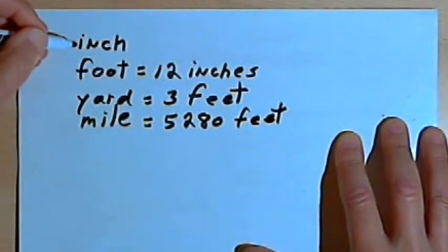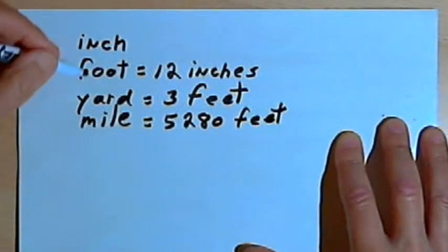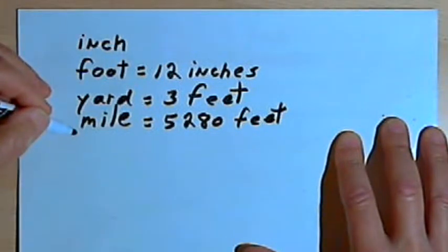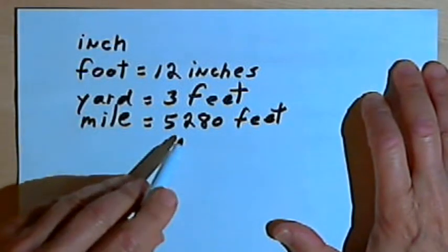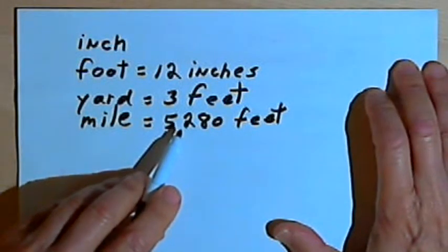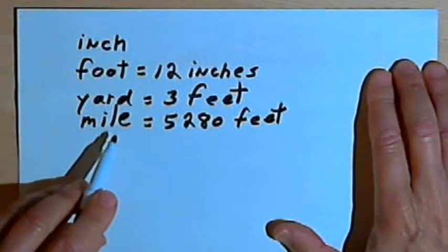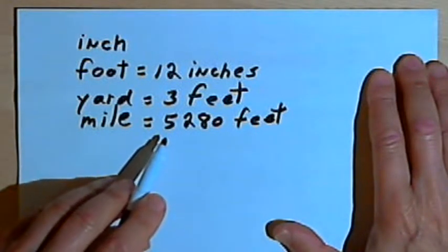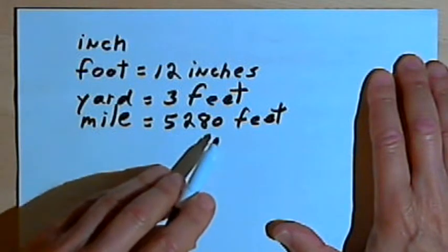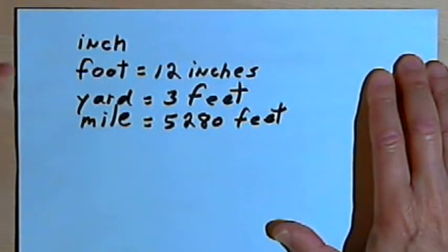Now the system gets kind of clumsy. You have to memorize all these different conversions. And the conversion numbers we're using, like 5,280, are not really convenient. So if you want to know how many feet there are in 3 miles, you're multiplying 3 times 5,280. The metric system is a whole lot easier.